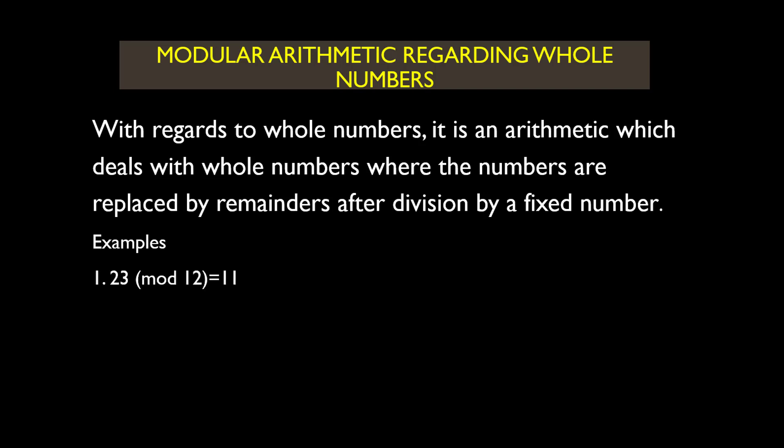Example 1: 23 mod 12 is simply equal to 11. Why? When you divide 23 by 12, you get 1 remainder 11, so 23 mod 12 is equal to 11. Number 2: 34 mod 13. When you divide 34 by 13 you get 2 remainder 8, so 34 mod 13 is simply equal to 8.